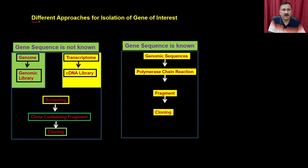When the genomic sequences are known, you can use the technique called polymerase chain reactions. With the help of site-specific primers, you can amplify the gene of your interest and ultimately get the gene fragments. So whether you use the genomic library, cDNA library, or PCR, ultimately you are going to get the gene fragments, and this gene fragment has to be cloned into a suitable vector for downstream applications.